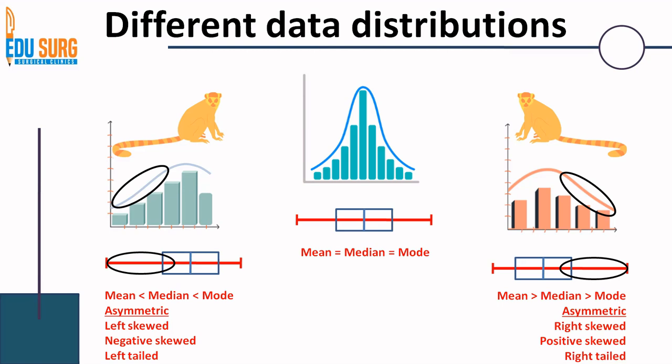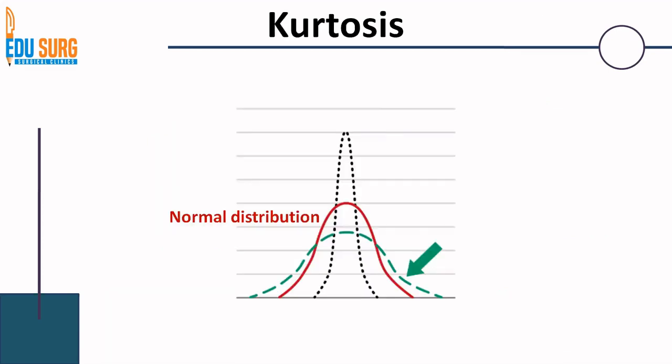This gives you around 10 to 20 multiple choice questions that are commonly asked. Remember and memorize this slide because different data distributions are very commonly asked in exams. Understand the concept: left tail means left skewed, mean is on the left, which means mean is less than median. The reverse applies for the right side.